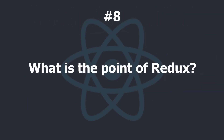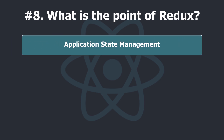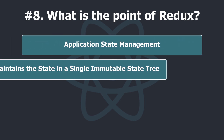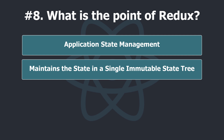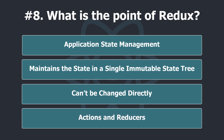What is the point of Redux? Redux is used mostly for application state management. To summarize it, Redux maintains the state of an entire application in a single immutable state tree, which can't be changed directly. When something changes, a new object is created using actions and reducers.